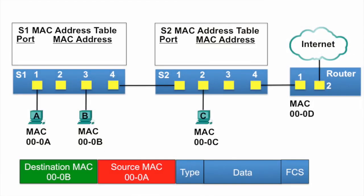In this video, PCA is going to send an Ethernet frame to PCB, and PCB is going to send an Ethernet frame to PCA. We're going to examine how switches S1 and S2 build their MAC address tables and also how they forward frames based on the information in those MAC address tables.